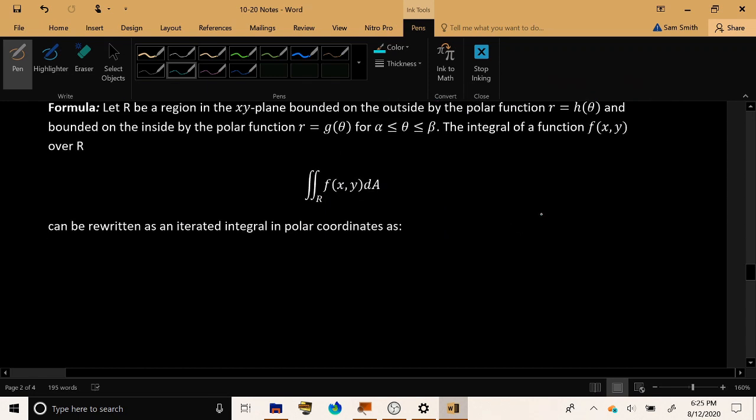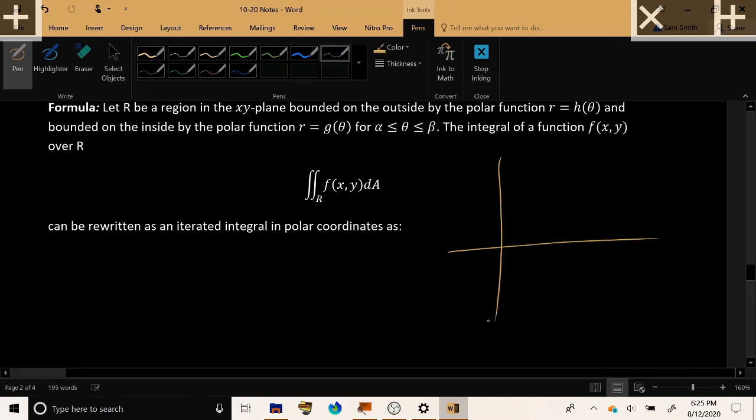Here's the formula we'll use. Let r be a region inside the x-y plane. Let's suppose that it's bounded on the outside by the polar function r equals h of theta, and bounded on the inside by the polar function r equals g of theta, for theta values valid from alpha to beta.